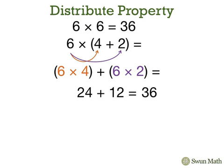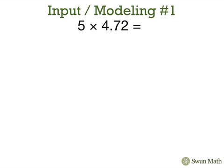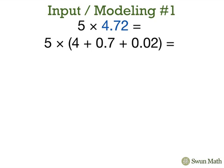We'll be using the distributive property to help us multiply decimals. We're going to multiply 5 times 4.72. First, we'll decompose 4.72 into 4 plus 7 tenths plus 2 hundredths.